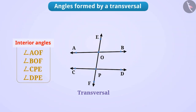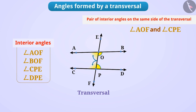Now, let us concentrate on interior angles. The transversal EF of lines AB and CD forms four interior angles that are shaded. If we look at angle AOF and angle CPE, we can see that they are on the same side of the transversal EF. Therefore, angle AOF and angle CPE are a pair of interior angles on the same side of the transversal. On the other side, angle BOF and angle DPE form another such pair.